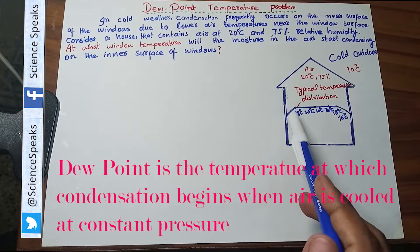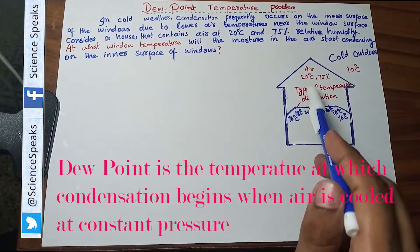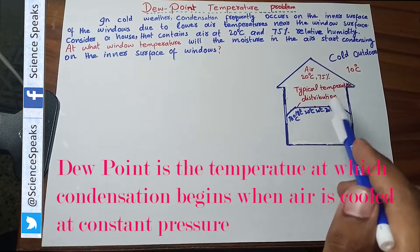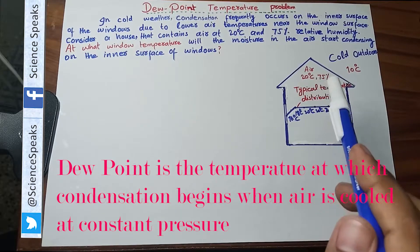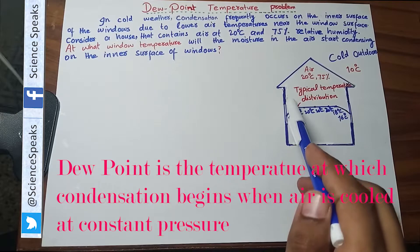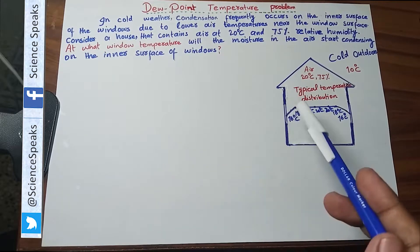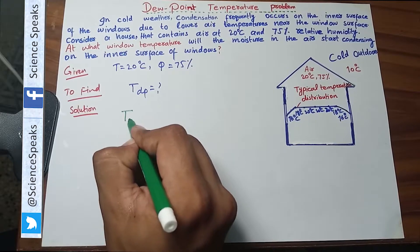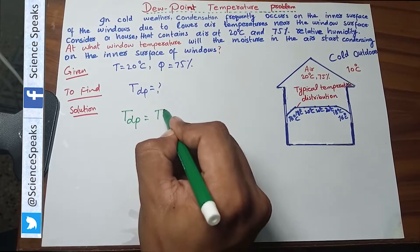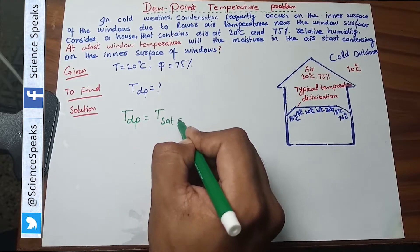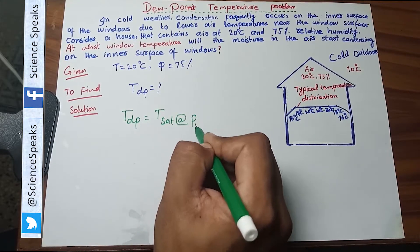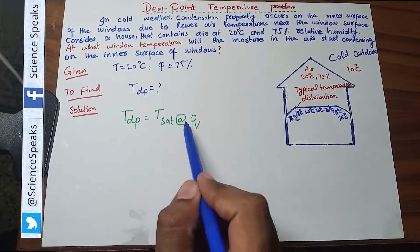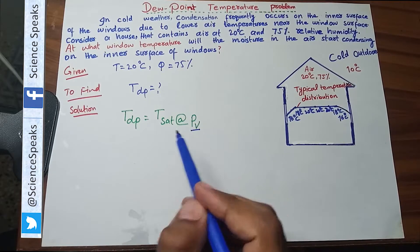The temperature at which water inside the atmospheric air which is present in the room will start condensing means you will see water drops here. So to find this temperature I note down the given data. Dew point temperature is basically the saturation temperature at given vapor pressure. So to find the dew point temperature I need this vapor pressure.